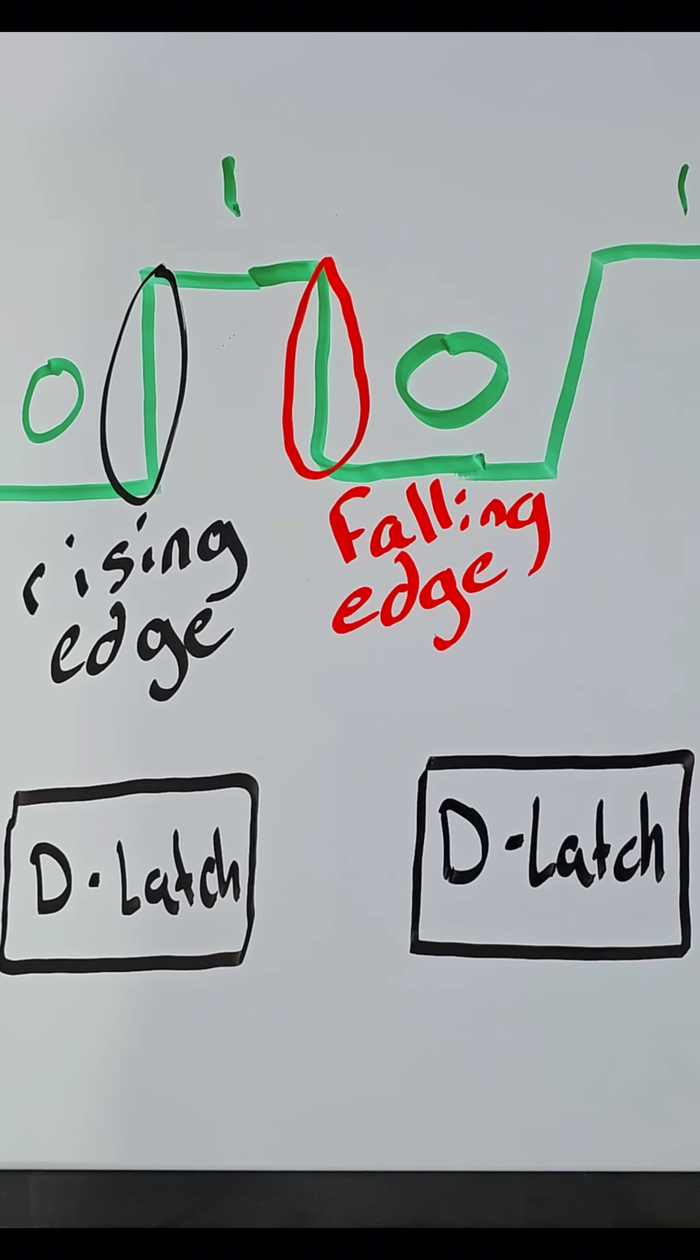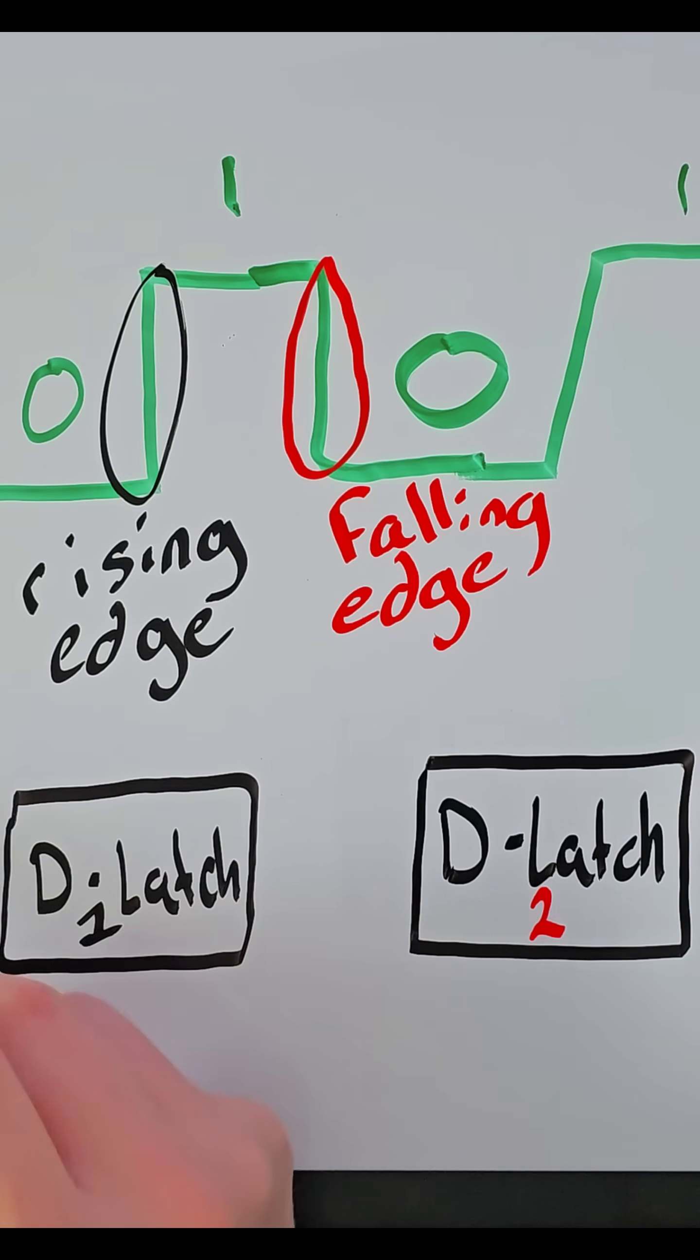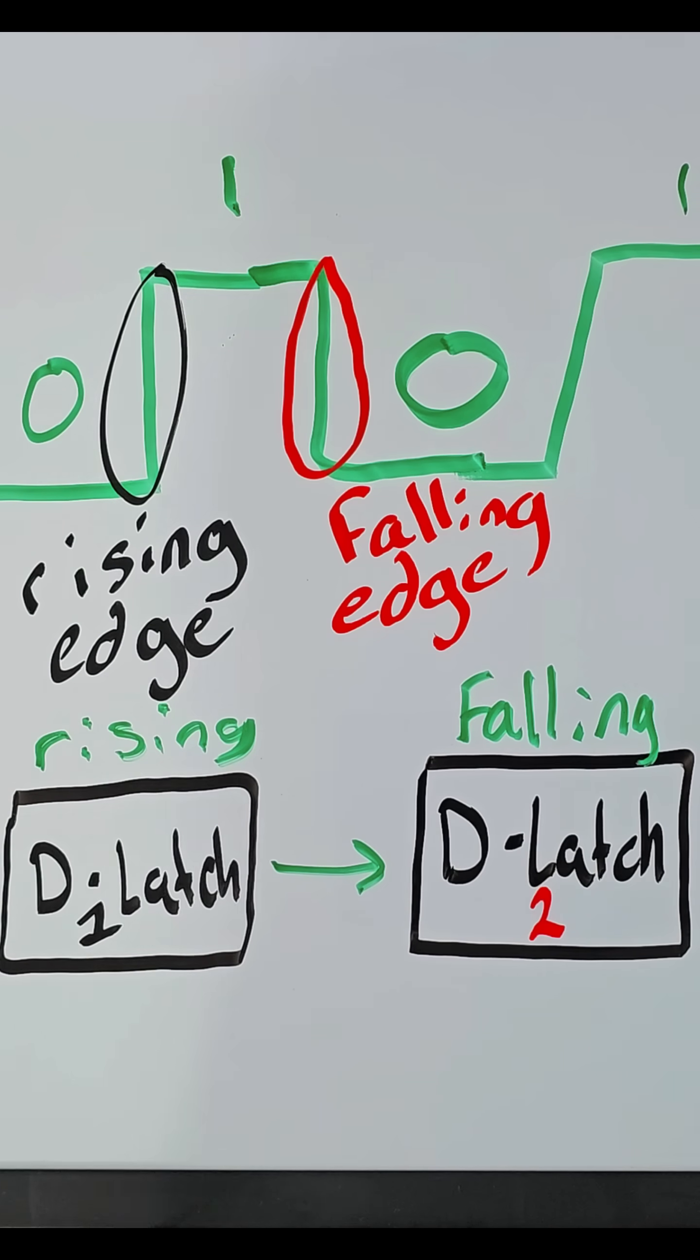One of the main reasons we need it to work this way is because we need to make sure that in between clock cycles, everything has settled down into its correct state. This is what gives us control and helps keep everything in sync.